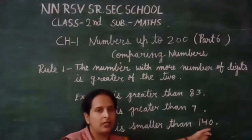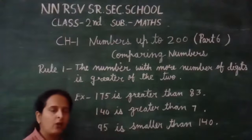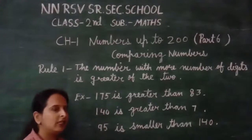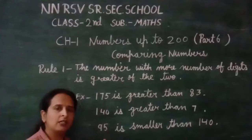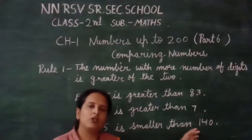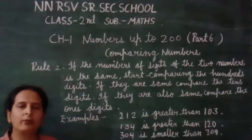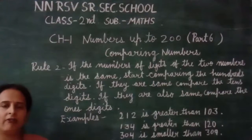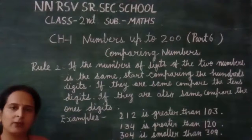So, a 3-digit number is greater than a 2-digit number, or we can say a 2-digit number is smaller than a 3-digit number. In Rule No. 1, we discussed the comparison of 2-digit numbers and 3-digit numbers.